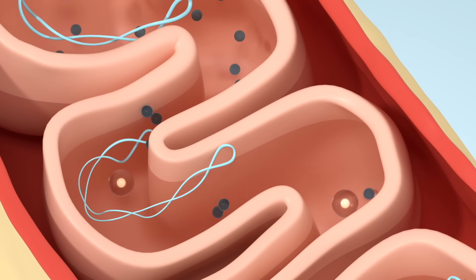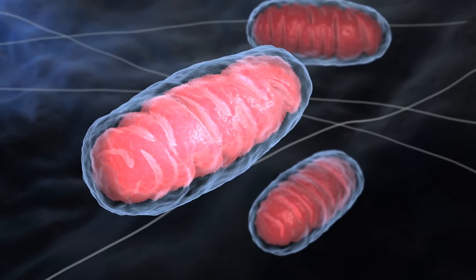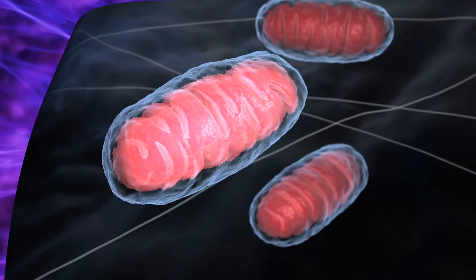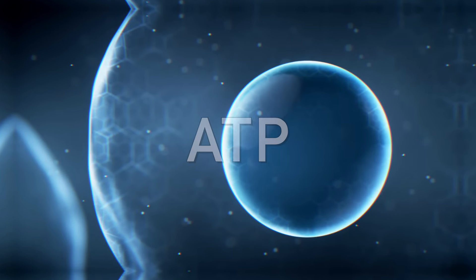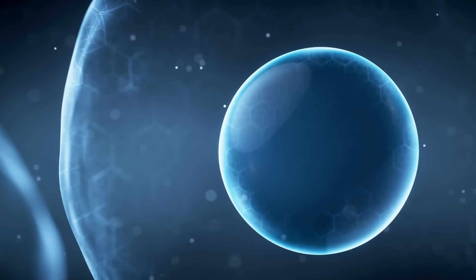Coenzyme Q10 is a helper molecule that is inside your mitochondria to help you make energy, ATP, in your cells. And it is in every single cell in the body. It helps in this transformation into ATP as well as stabilizing the membrane and preventing any type of leakage of electrons.